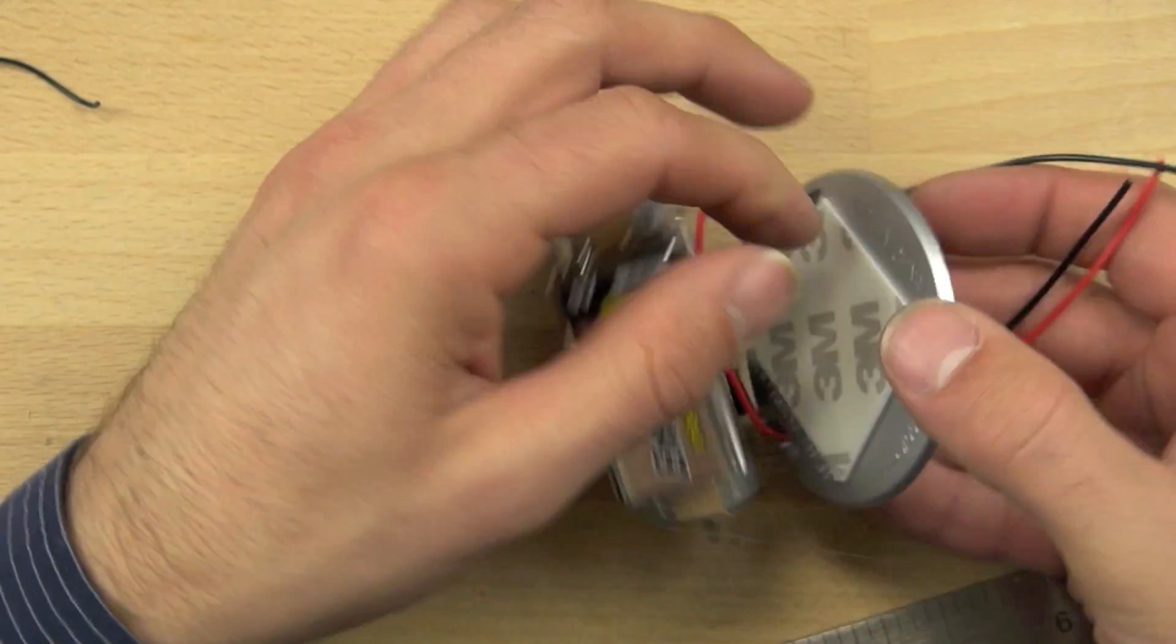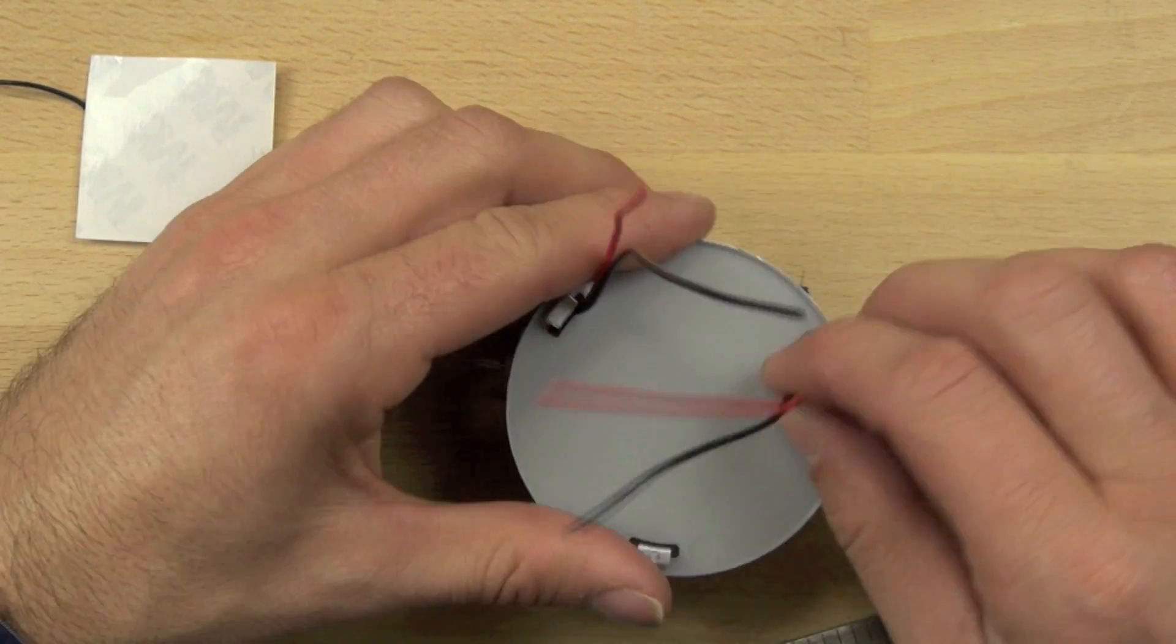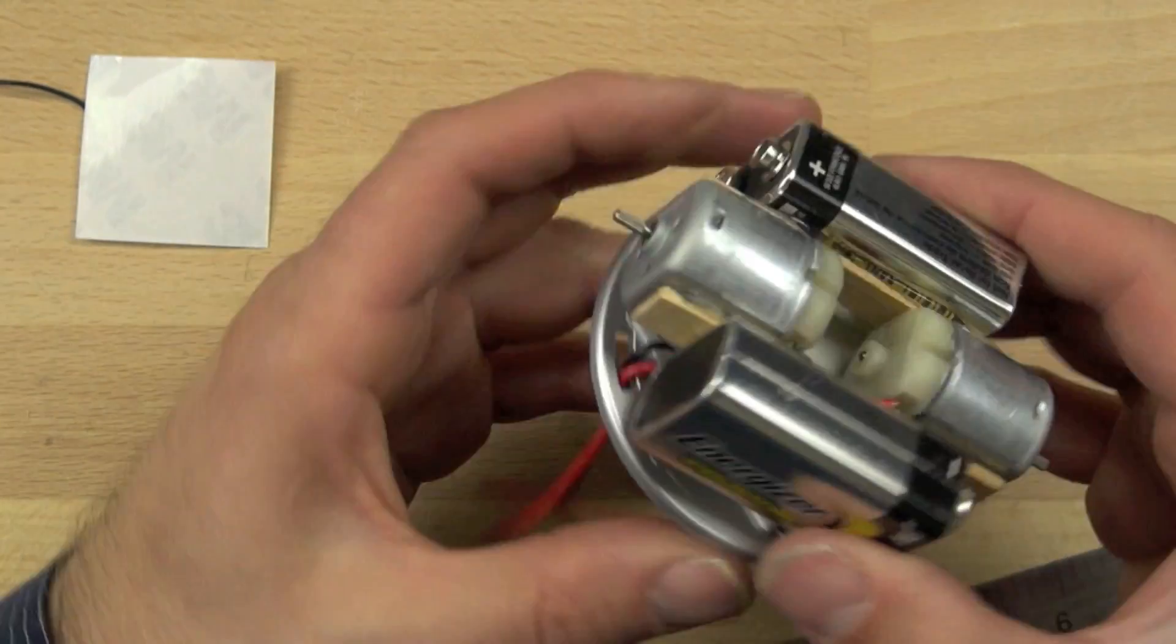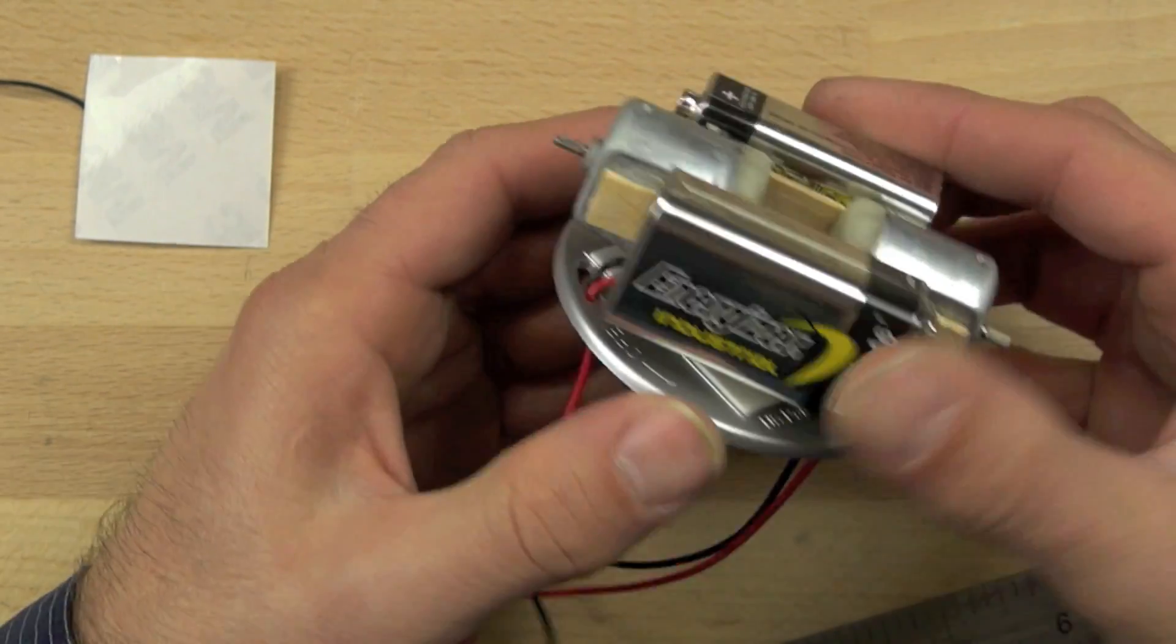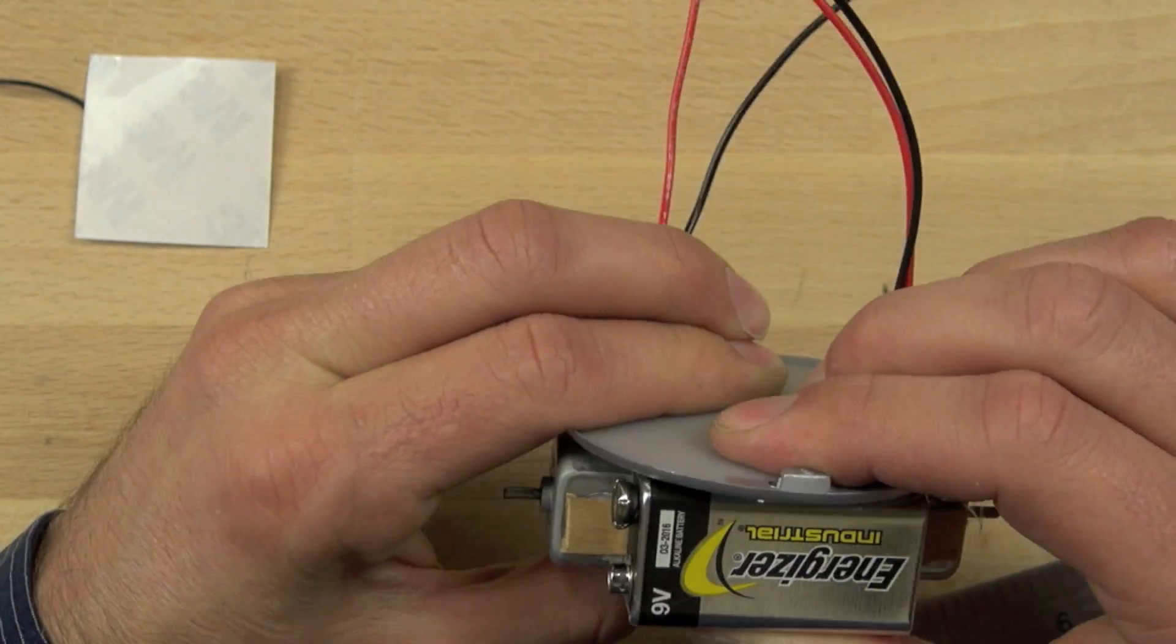The tap light base has double stick tape, so we'll peel that off. Once we have it lined up the way we want it, we'll double check to make sure it's in the perfect location above our motors and batteries, then we'll press it down.